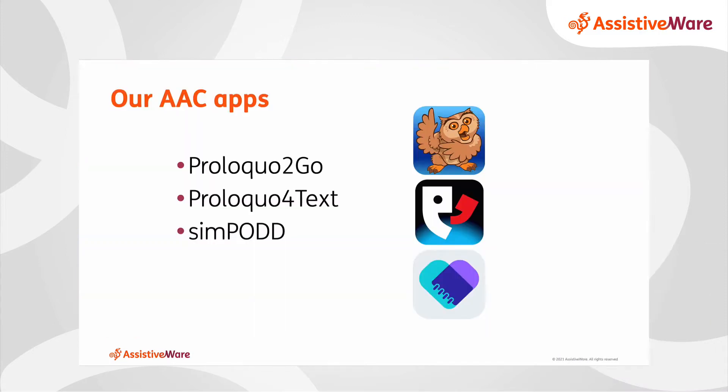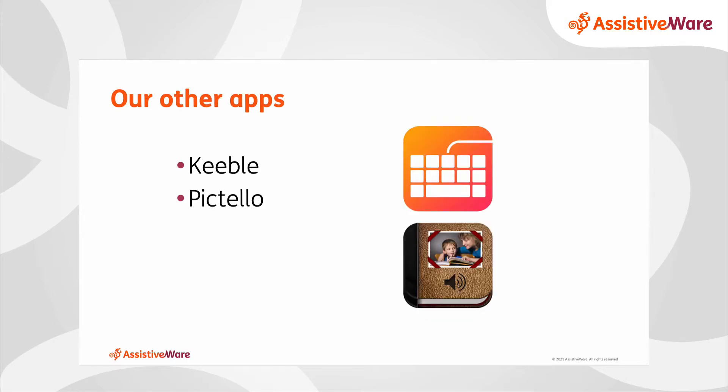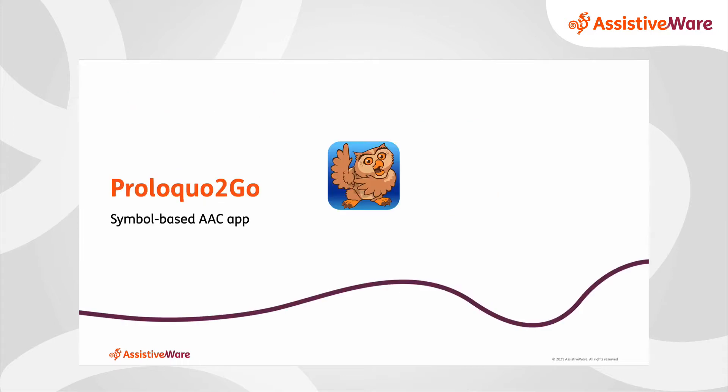Let's take a look at our AAC apps. We have Proloquo2Go, Proloquo4Text, and SymPod. Later, we will also look at some companion apps, Keeble and Pictello. Let's first look at Proloquo2Go, which has been around for a long time. You may have heard or seen it. It's our symbol-based AAC tool, and it's available on iOS and macOS.